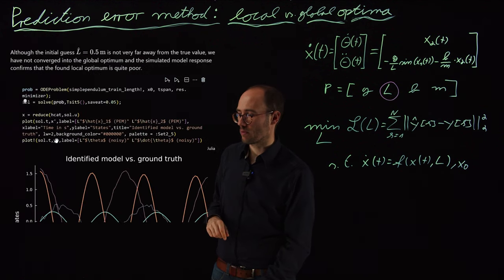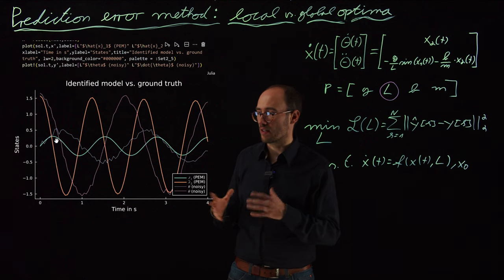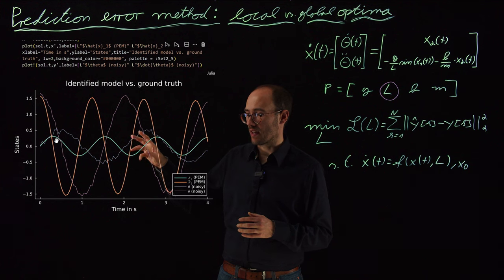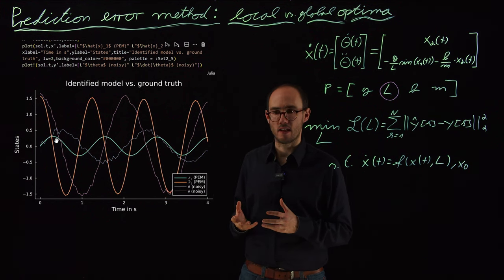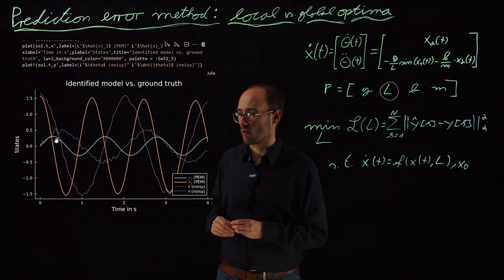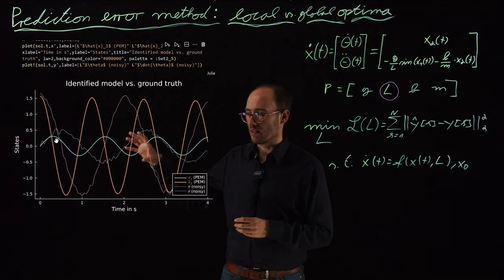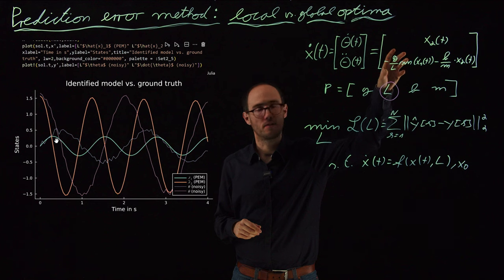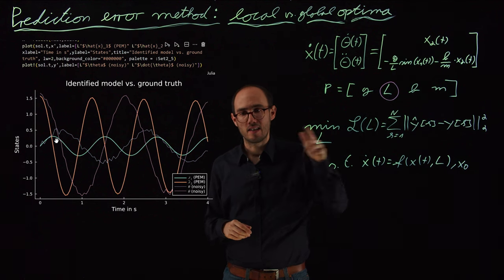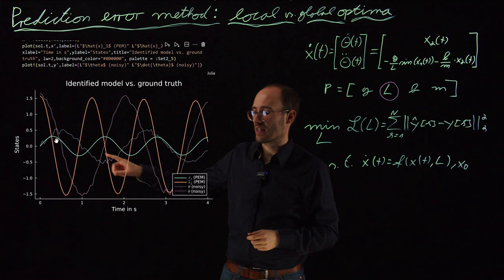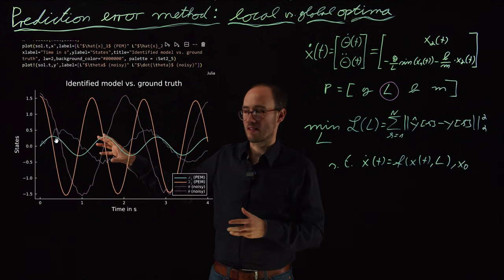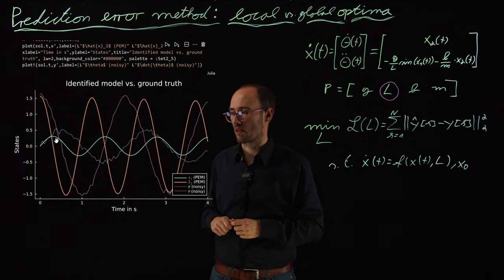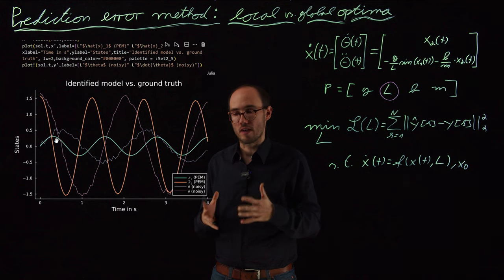And if we plot the model response with this completely erratic L, with this completely biased L, we can also see that the noisy ground truth data and the simulated data of the identified model, they are completely off. And this local minimum can be explained physically in that sense that the length value has a significant impact on the oscillating frequency of the pendulum,